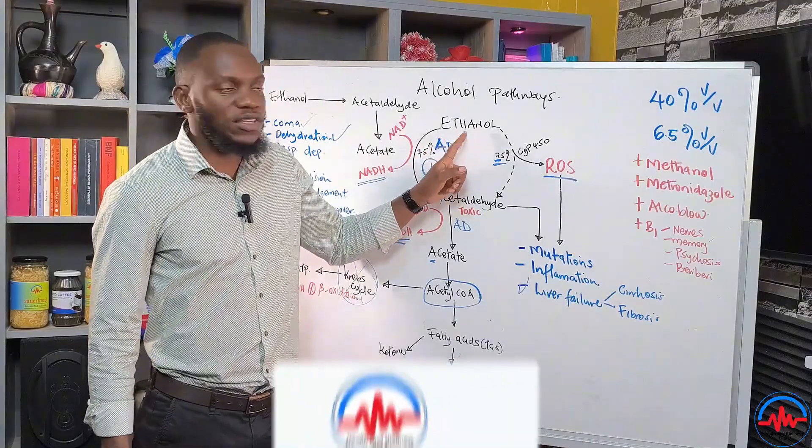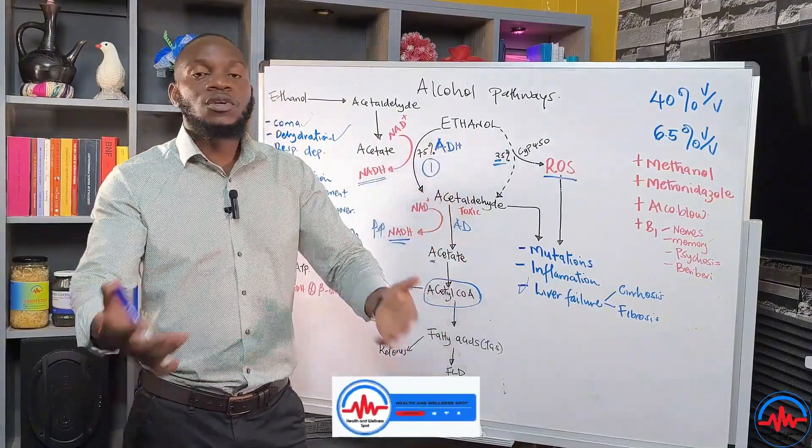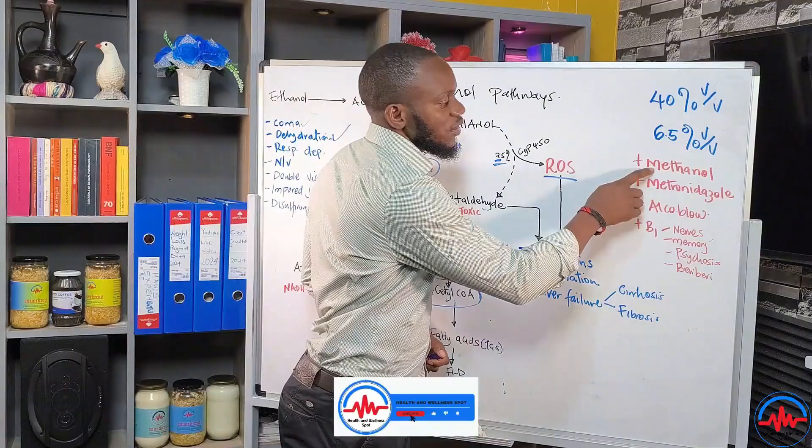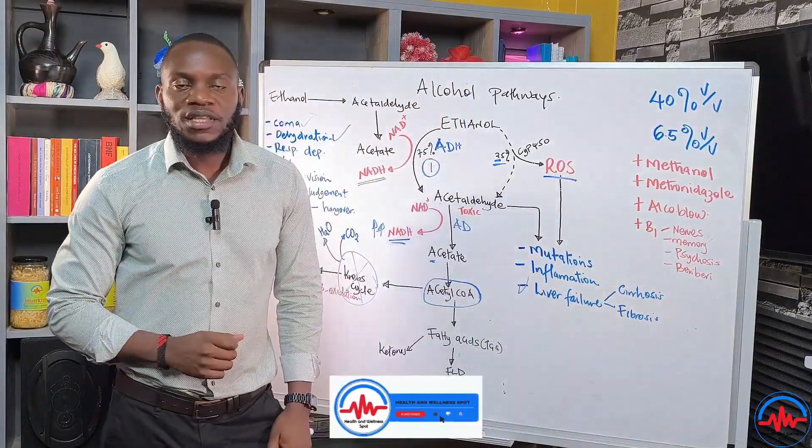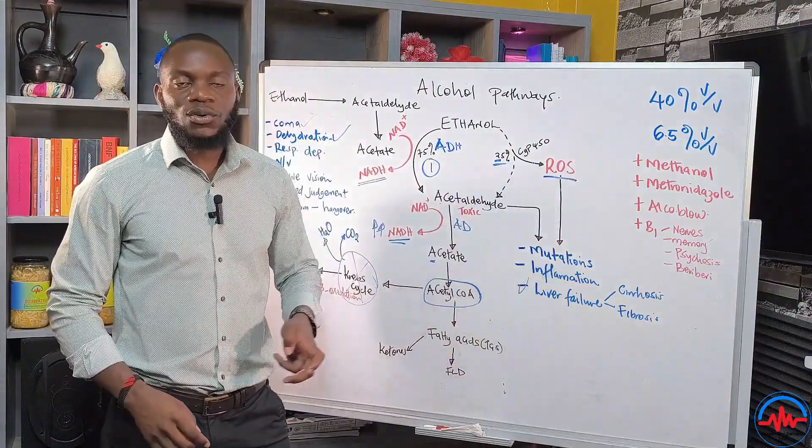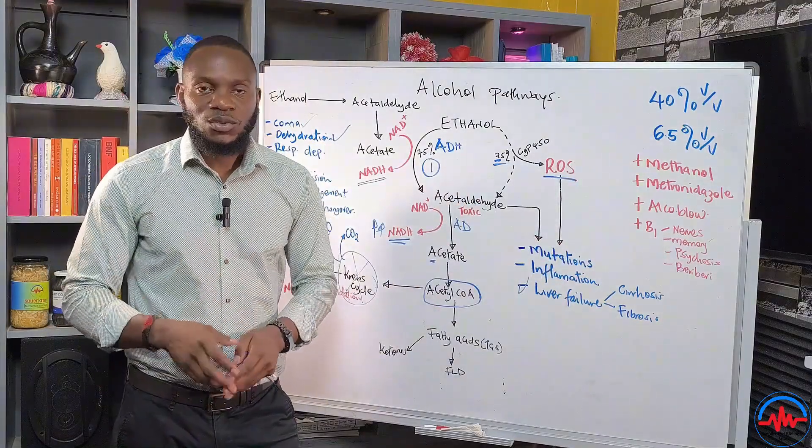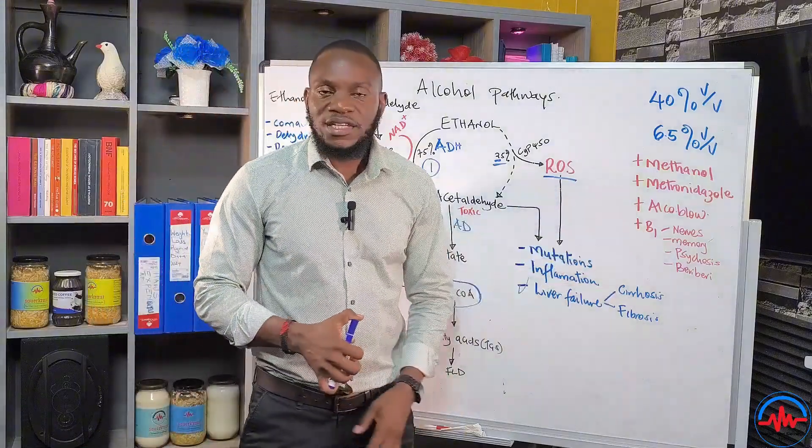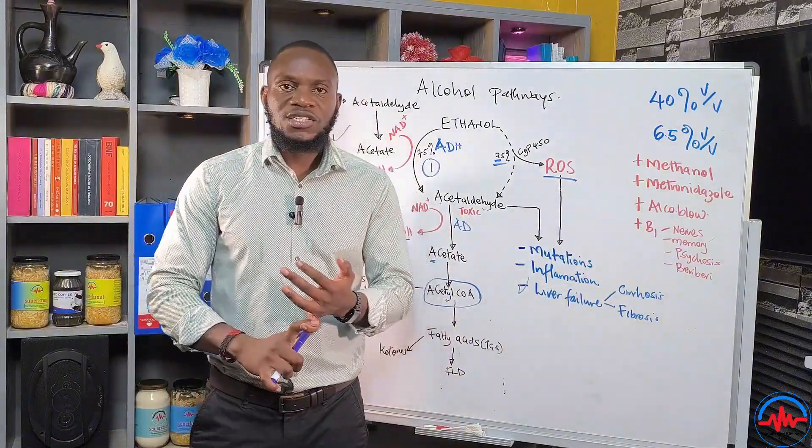And this ethanol has high affinity for this enzyme. That means it will be easier for you to do away with the toxification of methanol through using ethanol. Number two, there's a danger in people taking alcohol and still going ahead to take metronidazole.